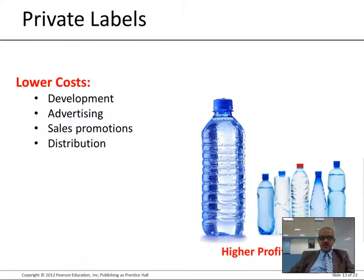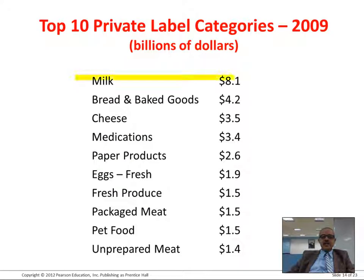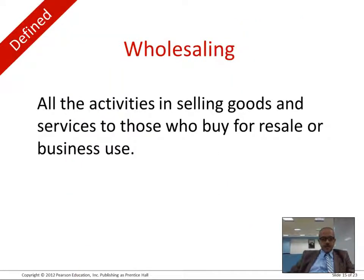Private labels benefit from low-cost in-store advertising and sales promotion. Because the retailer controls distribution, they earn high profit margins. Common private label products tend to be everyday commodities like milk that grocery stores offer under their own brand.